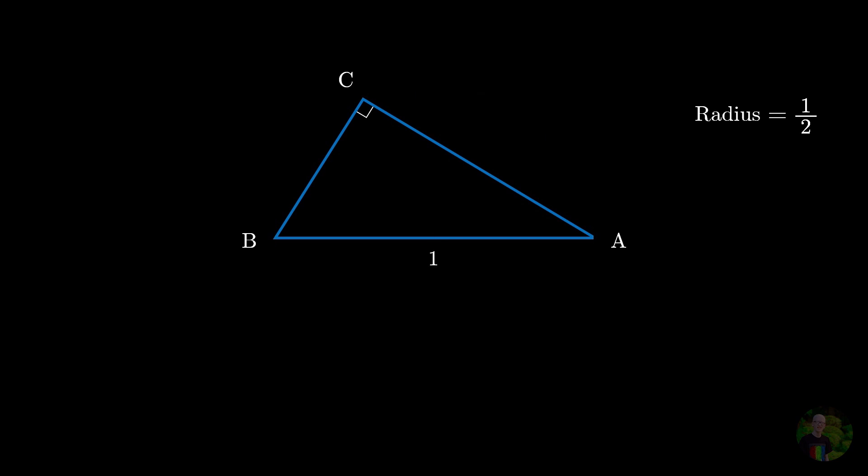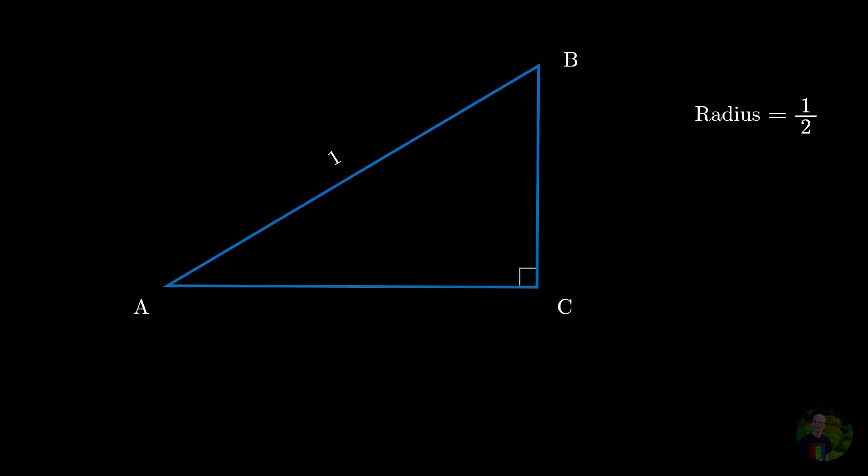Now we will rotate the diagram, again for our convenience, and we see that it's a similar right angled triangle as the previous one, where we also found out that the base of the triangle is cos A and the perpendicular is sine A, supposing that A is the reference angle. Nice!